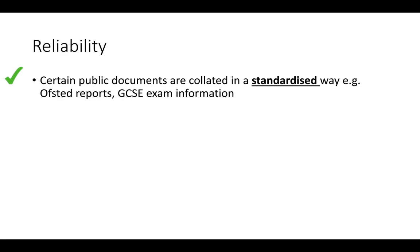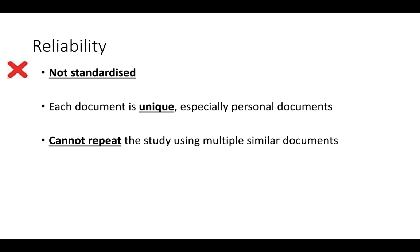Reliability: certain public documents are collated in a standardised way — Ofsted reports and GCSE exam reports follow the same structure every time, making them reliable. However, the vast majority of documents lack reliability. Each document is unique, especially personal documents like diaries and letters. These are one-off cases that can never be repeated, so there's no standardised format and we cannot repeat the study again and again.